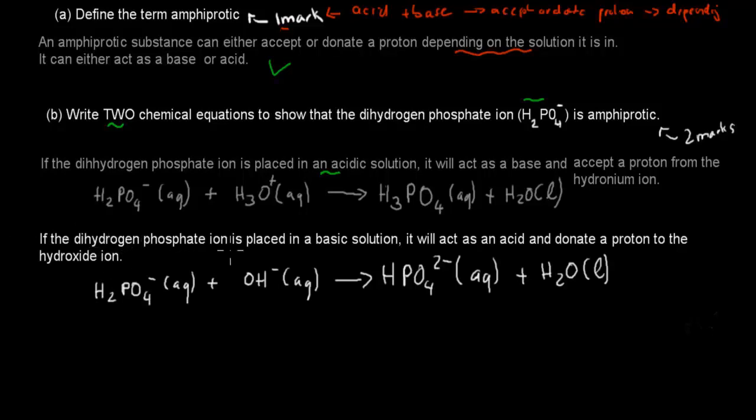If the dihydrogen phosphate ion is placed in a base solution, it will act as an acid and donate a proton to the hydroxide ion. So here we have our same dihydrogen phosphate ion. We've got our hydroxide ion, which means that that's the base solution.